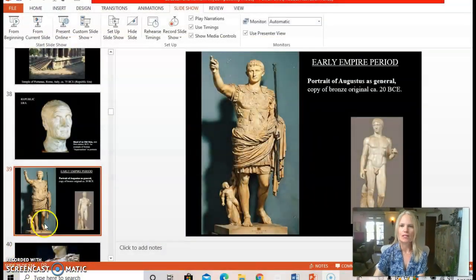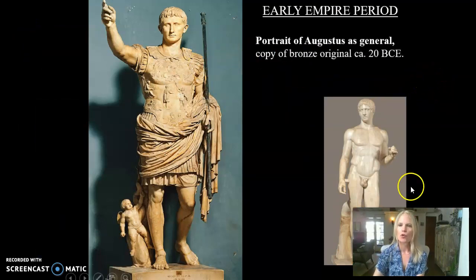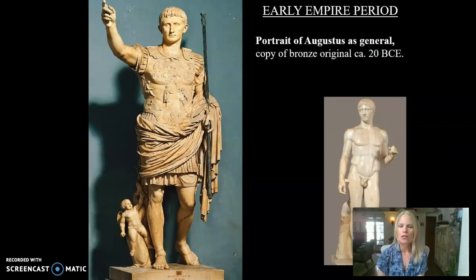Let's move on to our PowerPoints here and I will show you probably the most famous sculpture of all of Augustus. It's called Portrait of Augustus as General. This is another example where the original likely was executed in bronze, but unfortunately we only have a copy of that statue. The date of it is 20 BCE.